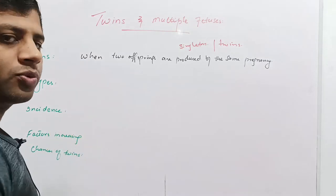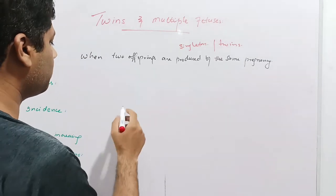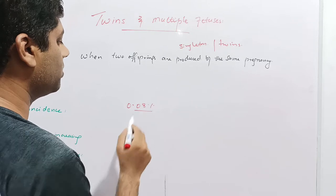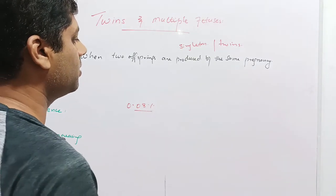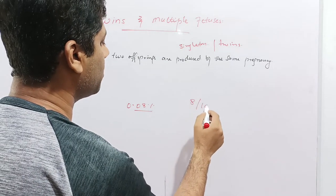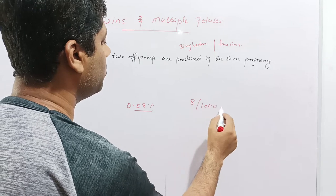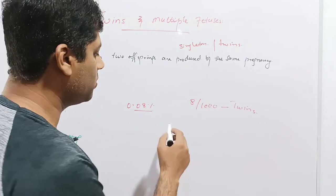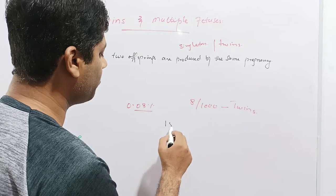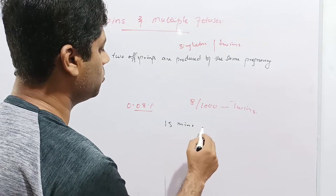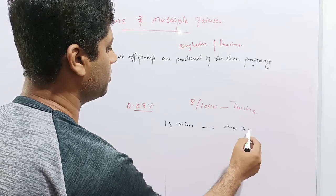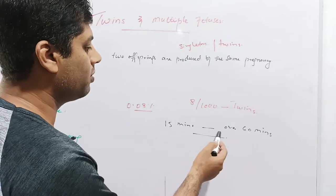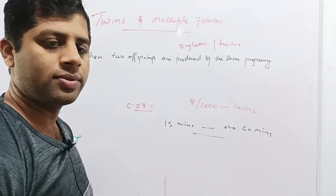Now the incidence of twin production: there is about 0.08 percent incidence of twins, meaning 8 pregnancies out of 1000 pregnancies will produce twins. The delivery time interval between two twins ranges from 15 minutes to over 60 minutes.